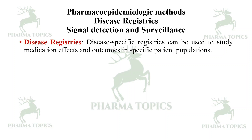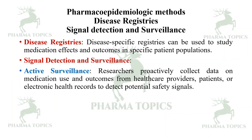Next is signal detection and surveillance. Disease-specific registries can be used to study medication effects and outcomes in specific patient populations. Active surveillance involves researchers proactively collecting data on medication use and outcomes from healthcare providers, patients, or electronic health records to detect potential safety signals.